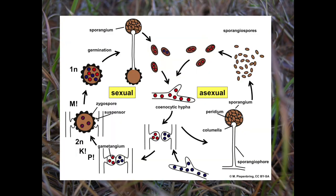Here we have a life cycle of the Zygomycota — just a typical representative. You can see it has both a sexual and an asexual part to its life cycle. It can produce spores by meiosis or by mitosis, and it might be a little difficult to follow. So the next thing I'm going to do is draw out this life cycle for you.